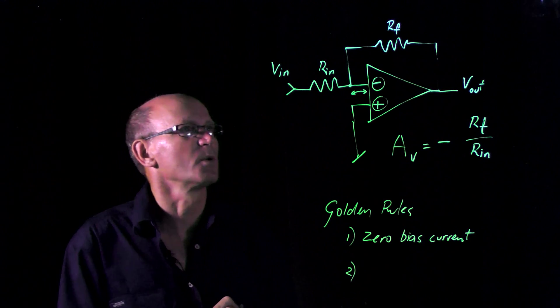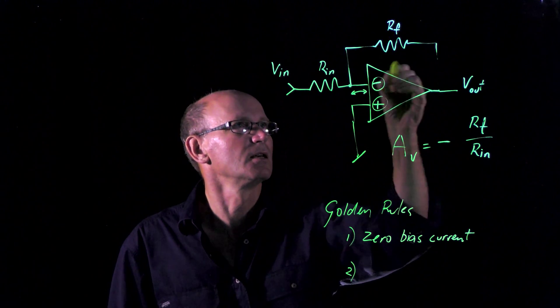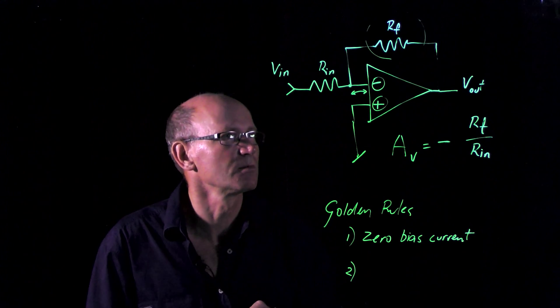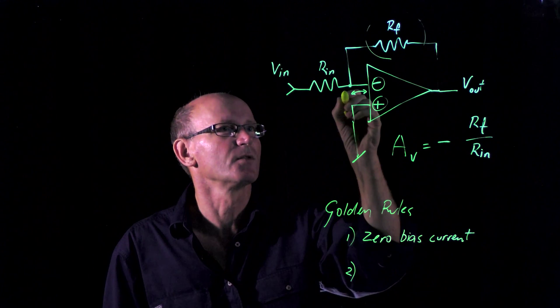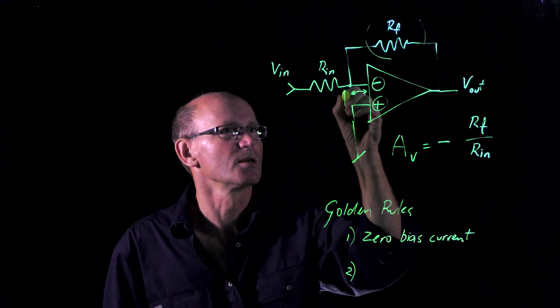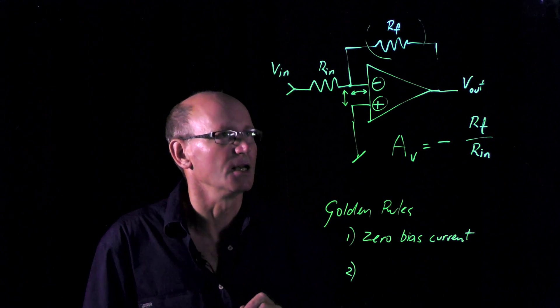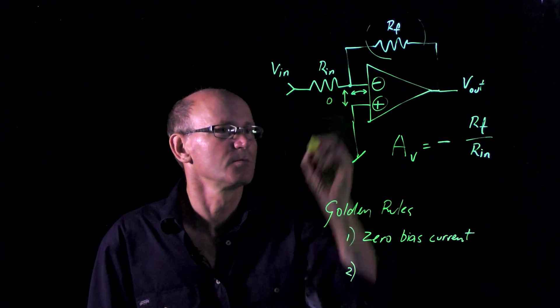Secondly, whenever we use feedback in an amplifier circuit, the amplifier will drive the difference between the inverting and non-inverting input to zero.